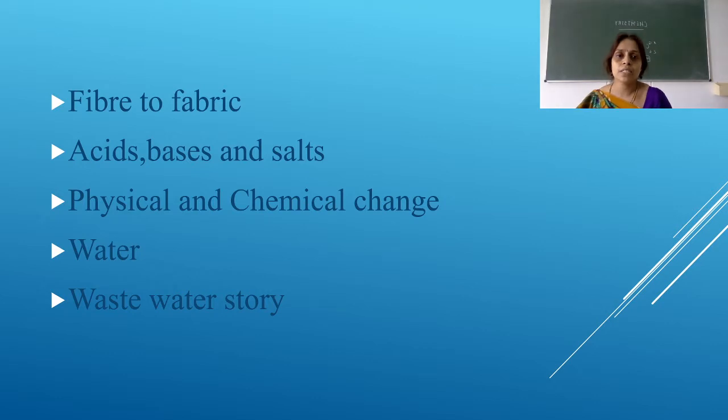In class 7th, you have studied fiber to fabric, acid, bases and salts, physical and chemical change, water, waste water story. You may think there was 18 chapters in science book, but here I have taken only 5. Why? Because all this you will study under chemistry. The other chapters will be segregated into physical concept as well as biological concept. And this is mainly chemistry strain.